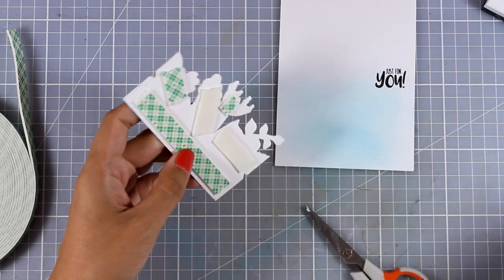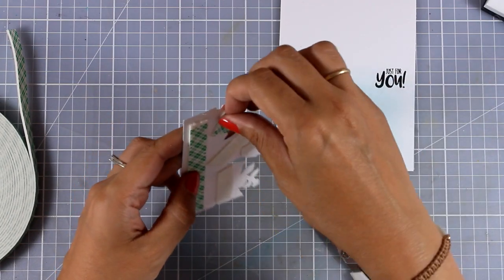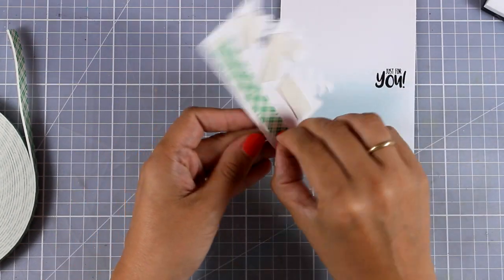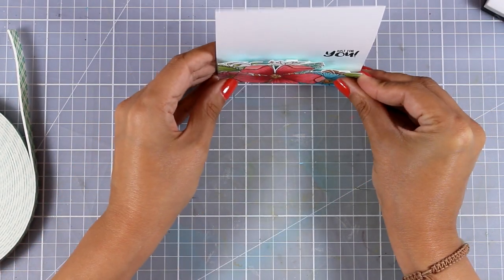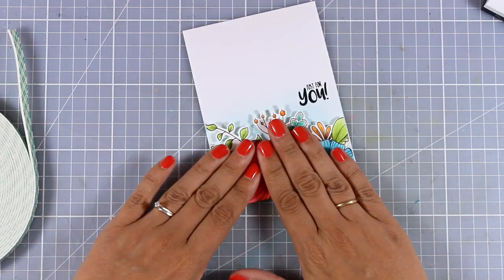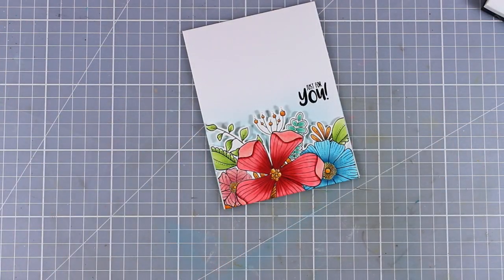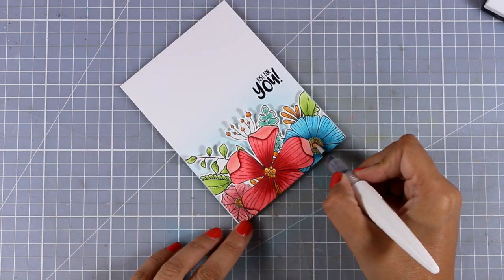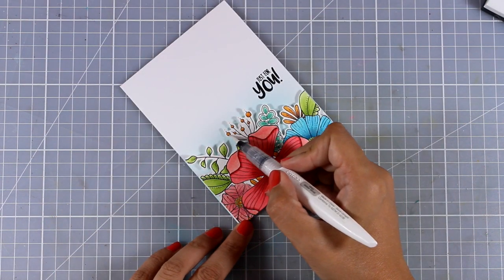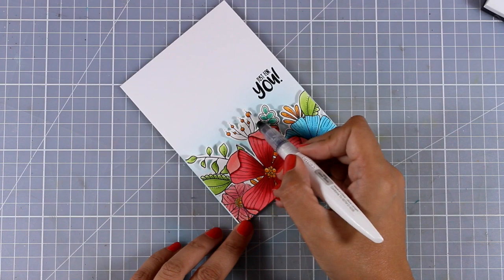And all that's left to do now is to add some foam tape at the back of my panel and then I'm going to tape it at the very bottom of my card base. By the way, the card base is a standard card that's four and a quarter by five and a half. And of course you can stop here, or if you are like me and I just couldn't help it, I had to add some shine with my shimmer pen by Nuvo.